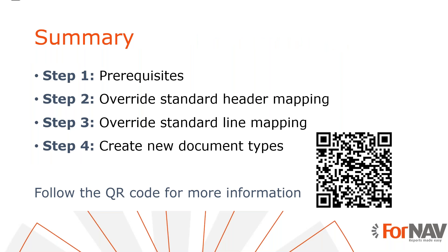Let's recap what we just did. First, we changed the header mapping — for basic information we update it directly; for more complex information like the seller we get the relevant sub-table first. Then we changed the lines, using a function to get the sub-table and iterating over entries. Finally, we found that we can completely override the ForNav mapping by subscribing to the OnDocumentToInvoiceDescriptor event. You can find all of the code from today in our GitHub repository — follow the QR code for more information.